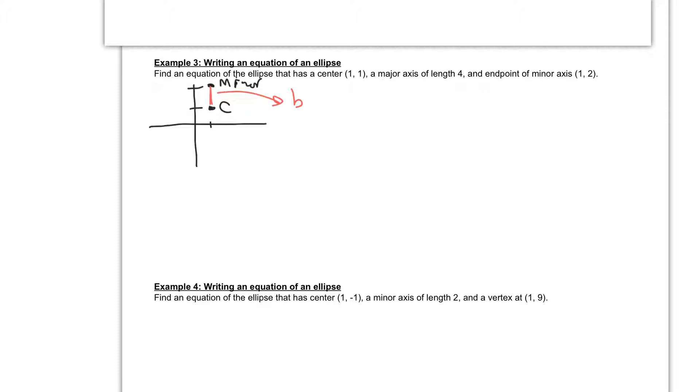So if I look at the distance between my center and my minor axis, that's a distance of 1, which indicates to me that our B value is equal to 1.